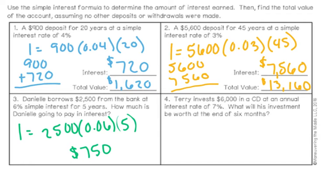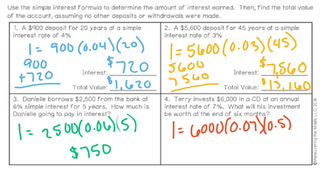The last problem says Terry invests $6,000 in a CD at an annual interest rate of 7% — this is just a type of savings account. We're going to figure out what his investment will be worth at the end of six months. One thing to notice is that the time in the formula needs to be in years. Since six months is half a year, I used 0.5 as my time. Plugging this in, the interest is $210. At the end of six months, he's going to have the $6,000 plus the interest of $210 for a total investment of $6,210.